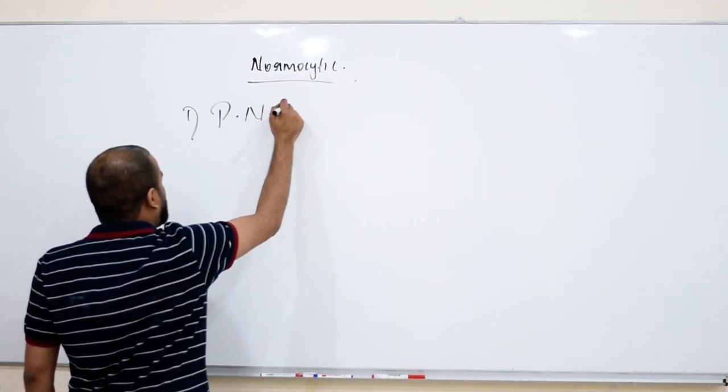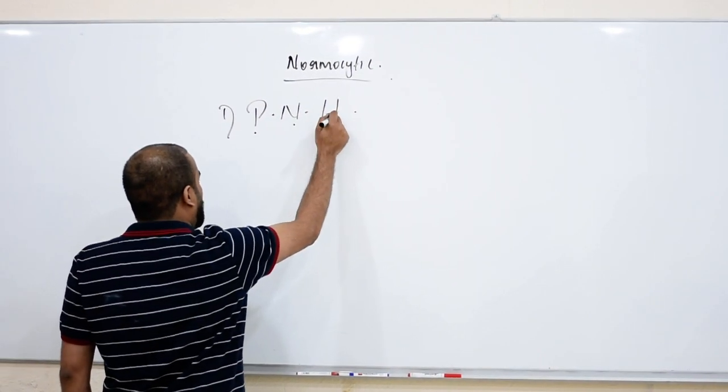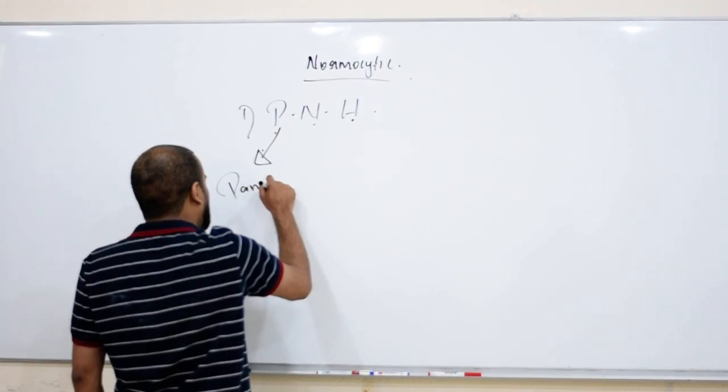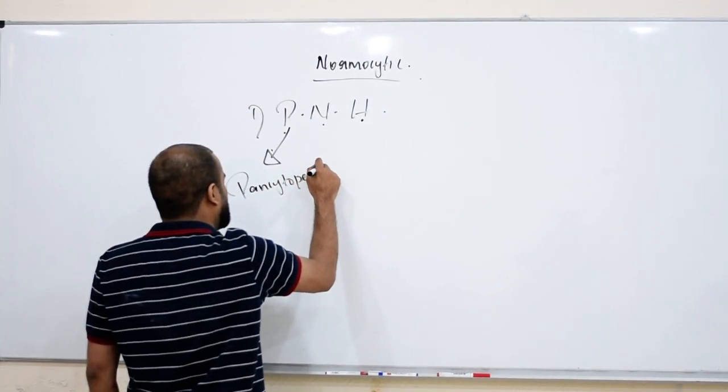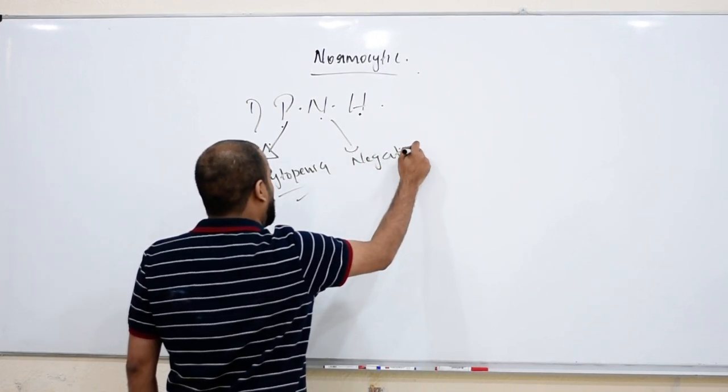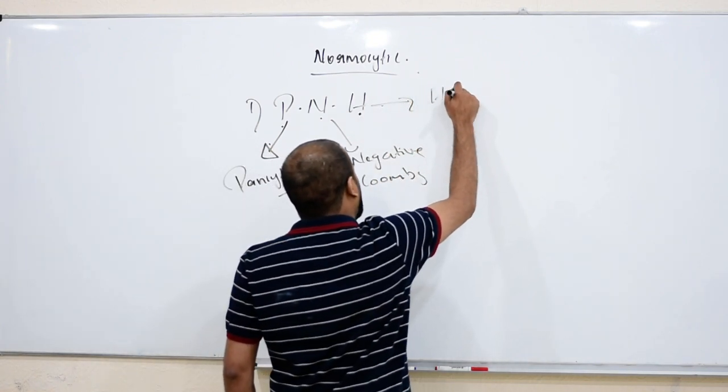Paroxysmal nocturnal hemoglobinuria. From the word itself we can come to the answer - this is pancytopenia. There will be decrease in every cell. This anemia will show negative Coombs test and you will have hemoglobinuria.